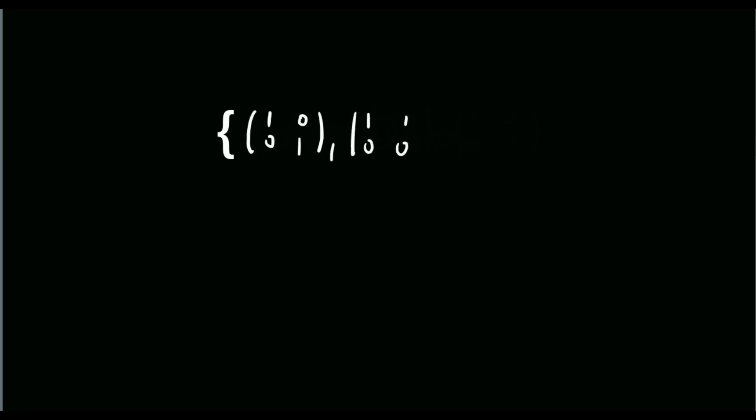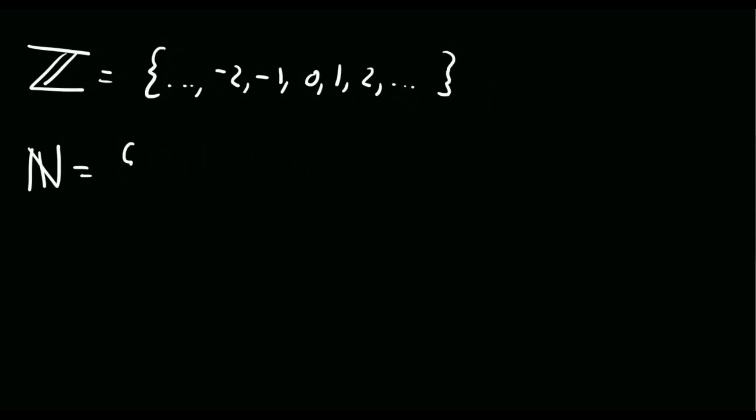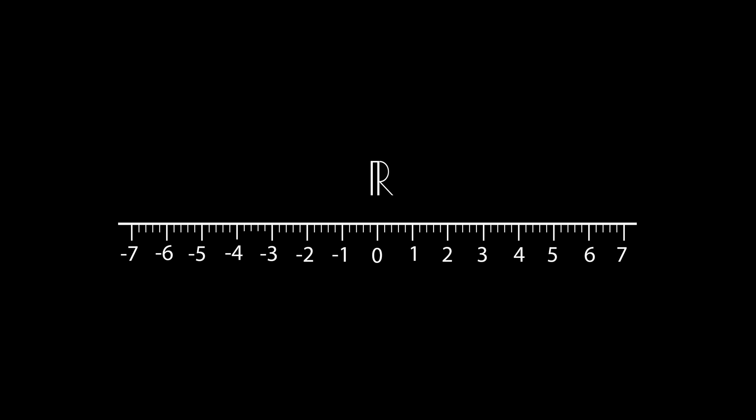Although in practice, we tend to come across more sensible ones, some of which contain infinitely many elements, like the integers and the natural numbers. And other ones we can't write down so simply, like the real numbers, which contains every number on the real line.